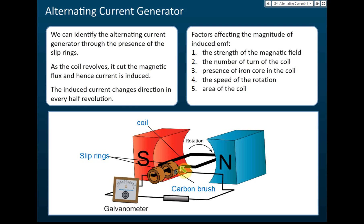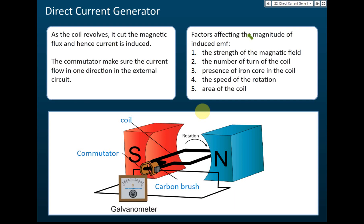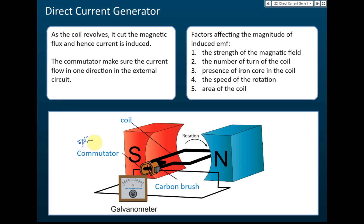So what's the difference between a direct current generator and an alternating current generator from the structure? The difference is the slip rings and the commutator. For the direct current generator, the carbon brush is connected to the commutator. The commutator is a split ring — it's supposed to be a ring but it's split, so we call it a split ring commutator.